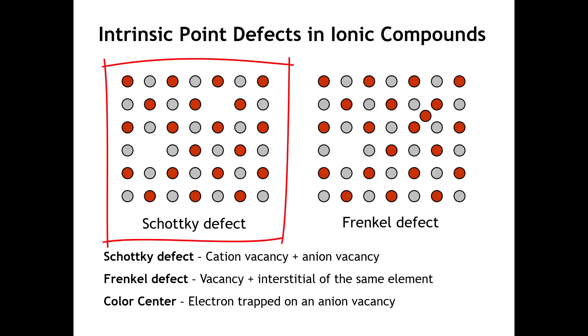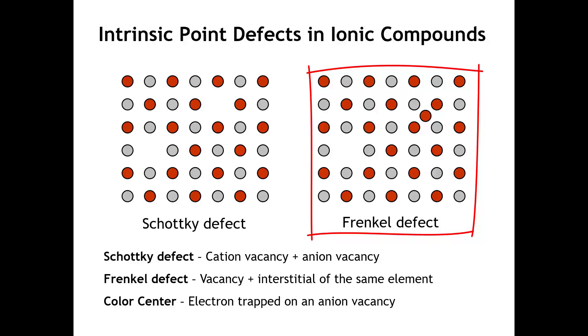You can see on the left, a Schottky defect is a cation vacancy along with an anion vacancy. A Frenkel defect is a defect that happens when we take an ion from the site where it's supposed to be, and we move it to an interstitial. So we can see in the drawing on the left that there is a red circle missing from the lattice, and that red circle is not gone, it's just been moved to an interstitial site. And then yet another kind of point defect that we can get in ionic compounds would be that of a color center.